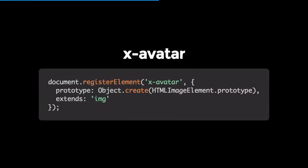Let's build our x-avatar element. We do the same registration, but there are two different things: on the prototype we're setting the prototype of the element we're extending, which is HTMLImageElement.prototype. And we also pass a second property called extends, passing a string of the tag we want to extend — which is 'image'. This informs our component that we're extending an existing element, not creating a whole new one.